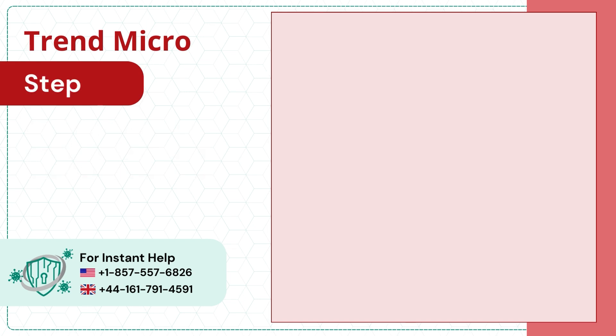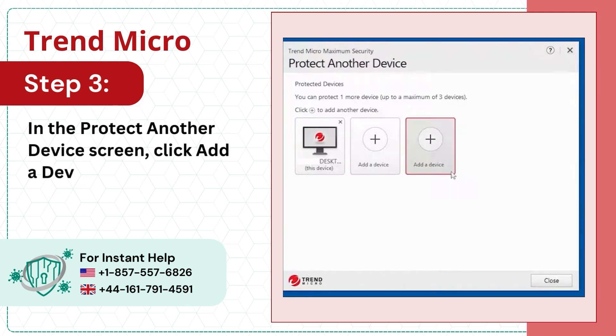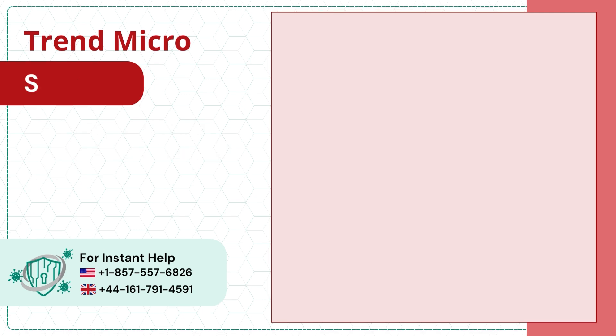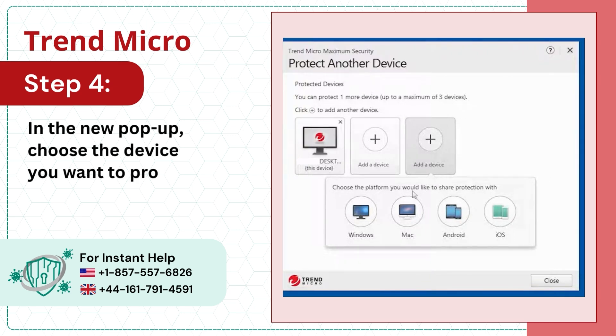Step 3: In the 'Protect Another Device' screen, click 'Add a Device.' Step 4: In the new pop-up, choose the device you want to protect.